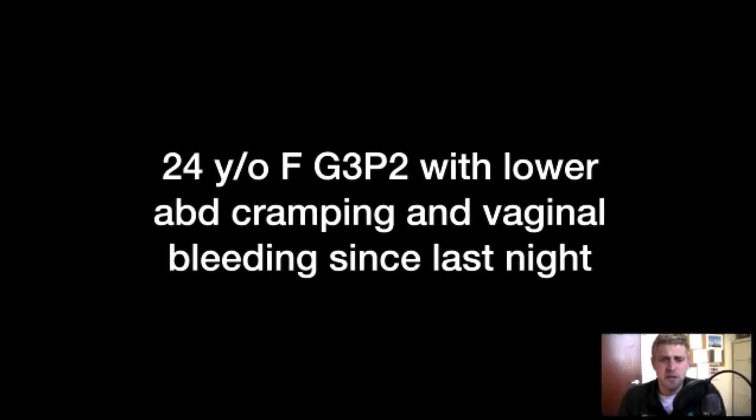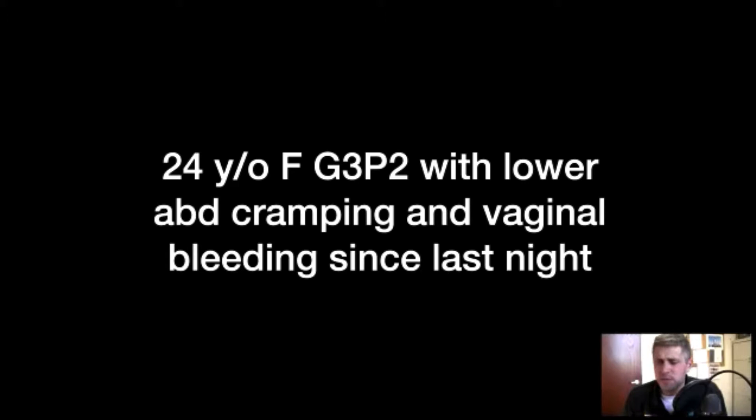Two previous live births, kids maybe five and three. She's coming in for a third pregnancy with lower abdominal cramping and vaginal bleeding that started last night. This is obviously disquieting for the patient; she's come to the emergency department to seek help and figure out what's going on. You get the history: pelvic pain feels like a period, she's got some bleeding, more than spotting.